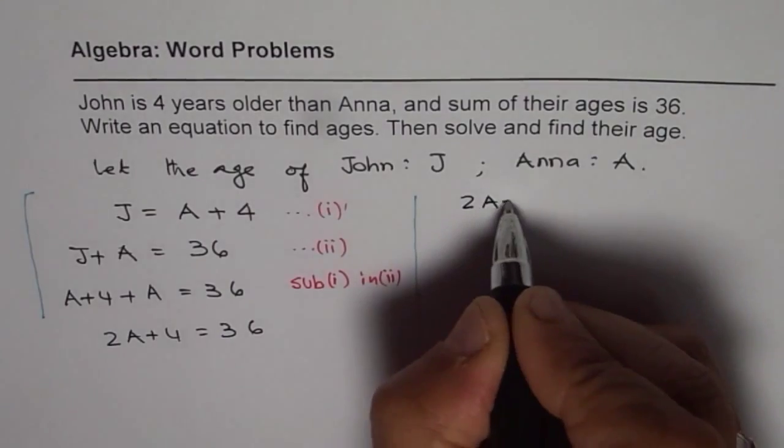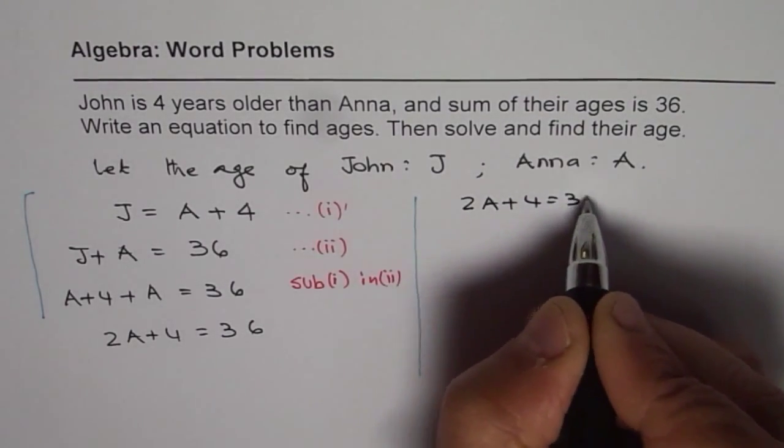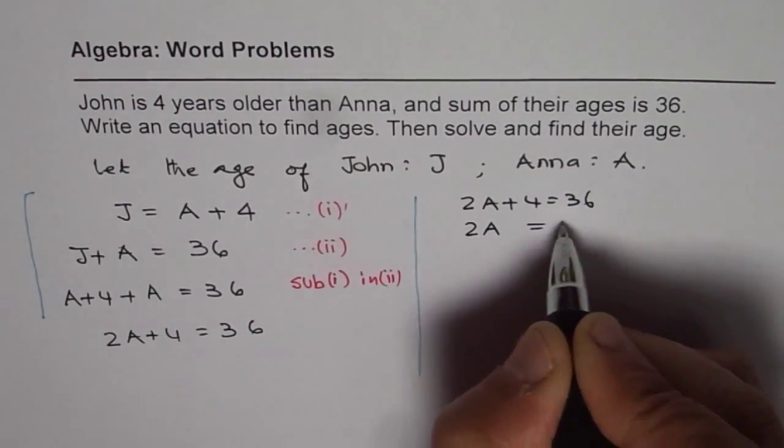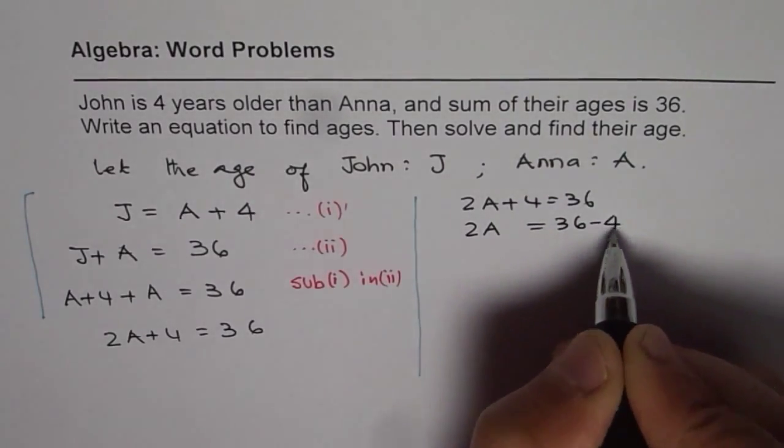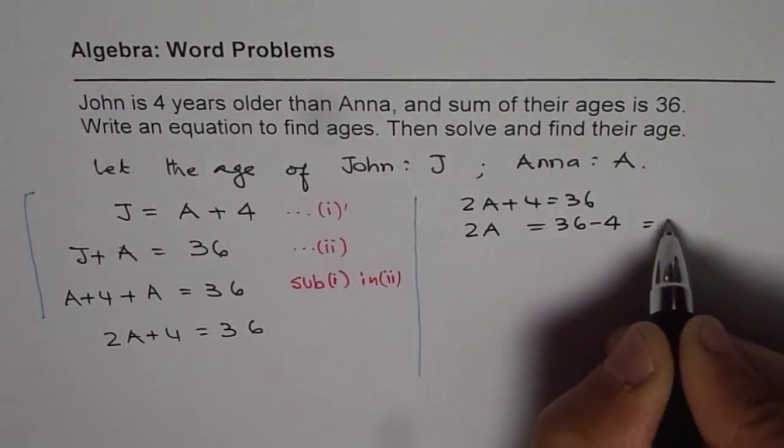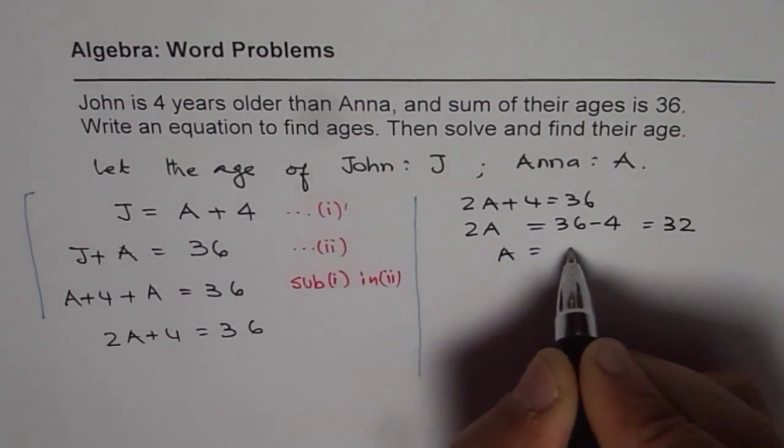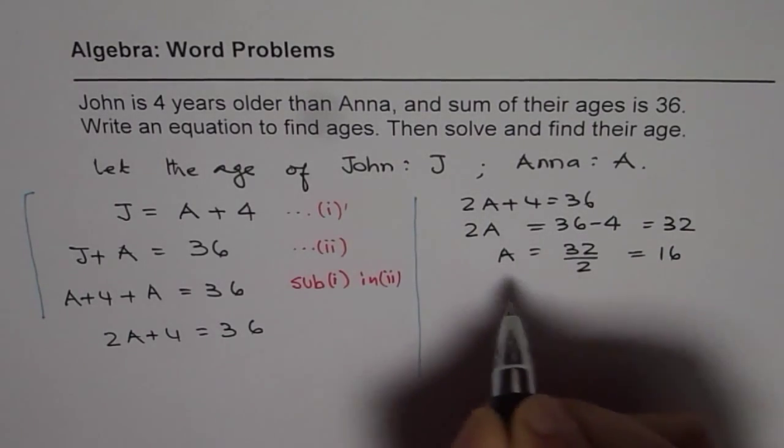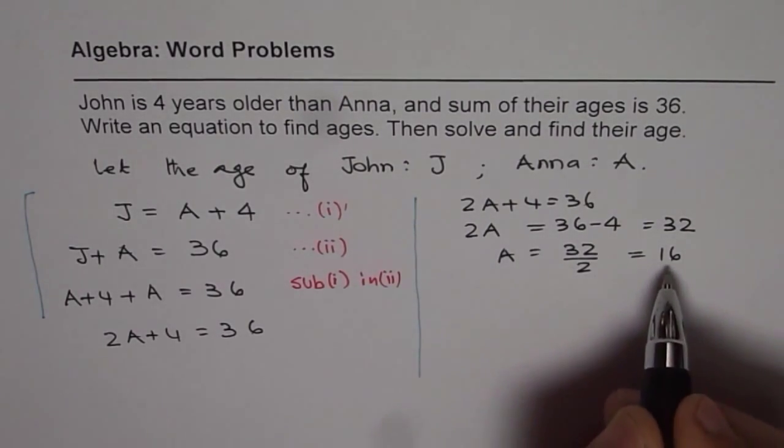We have 2A plus 4 equals 36. We can subtract 4 from both sides. So we get 2A equals 36 minus 4, which is 32. And then A will be 32 divided by 2, which is 16.